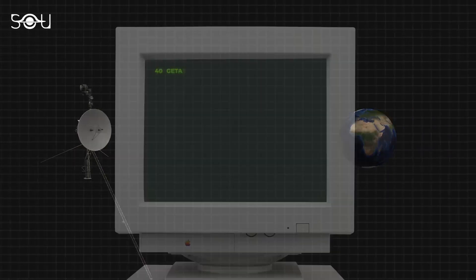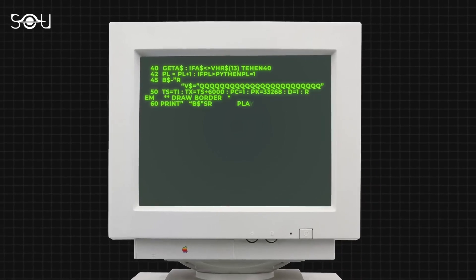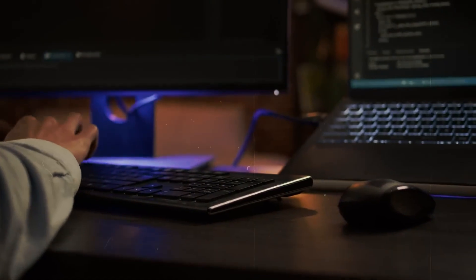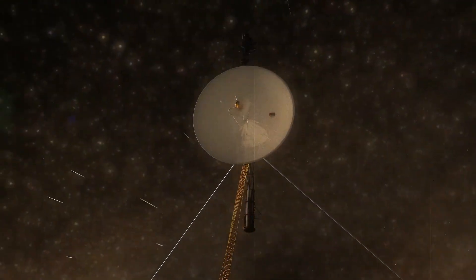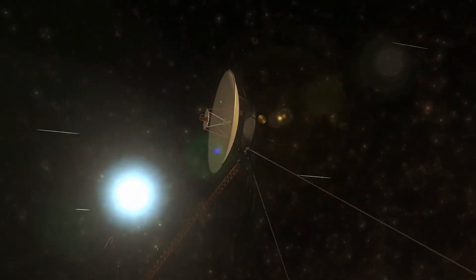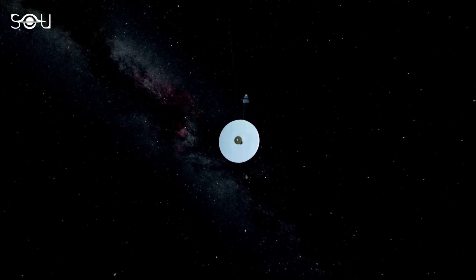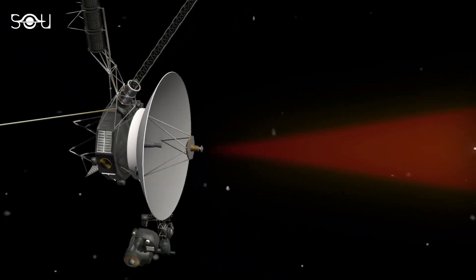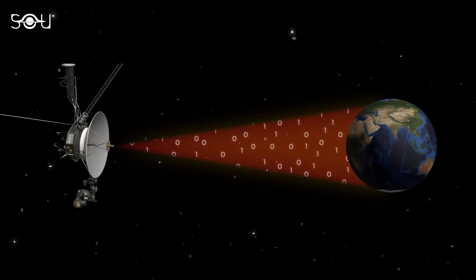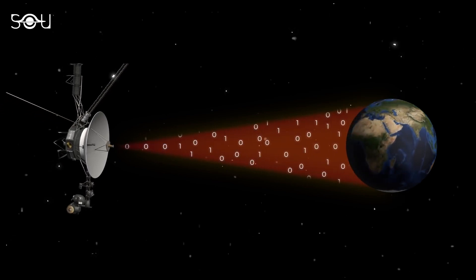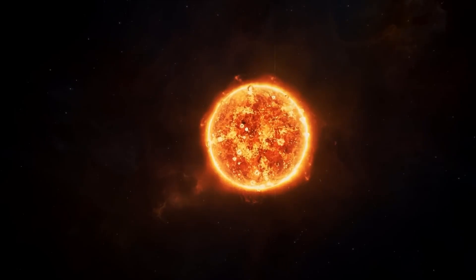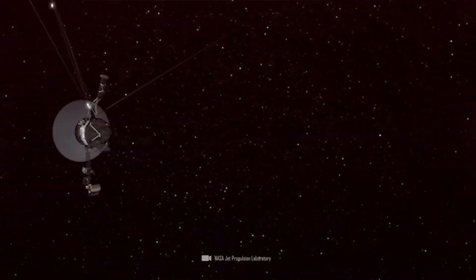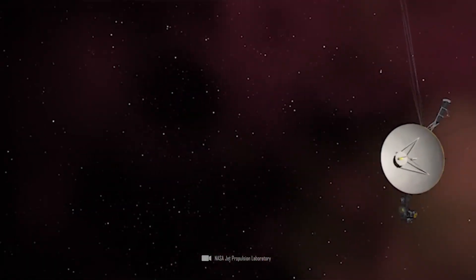Despite the recent success, Voyager 1's days of transmitting scientific data are numbered. The spacecraft's power is projected to run out sometime beyond 2025, after which it will drift silently through the Milky Way. Scientists are hopeful that it will continue sending valuable data until its 50th anniversary. Meanwhile, the mission team continues to relocate and tweak the affected parts of the FDS software, ensuring Voyager 1 is ready to resume its scientific journey.